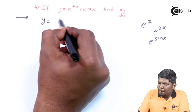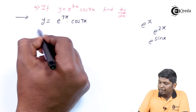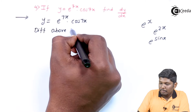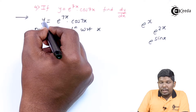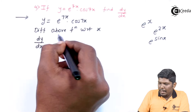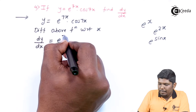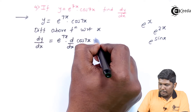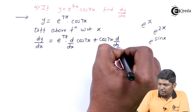y is equal to e raised to 7x into cos 7x. Differentiating the above function with respect to x, the derivative of y with respect to x is written as dy/dx. The right-hand side will be solved using the UV rule: u as it is, times the derivative of v, plus v as it is, times the derivative of u.